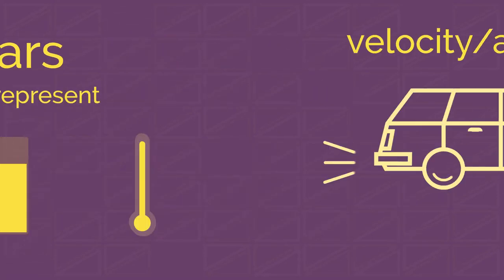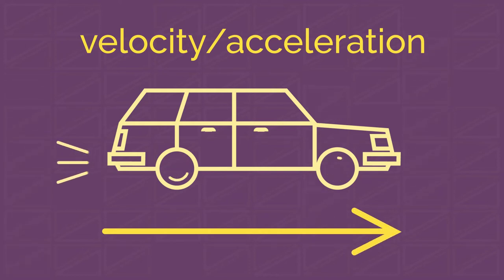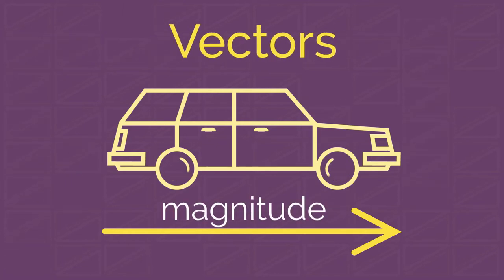But when we deal with other properties, such as velocity and acceleration, we may use both a size and a direction. Such objects, which have a direction and a size or magnitude, are called vectors.